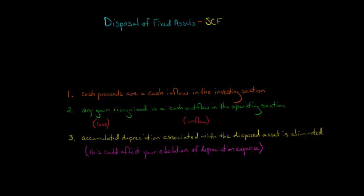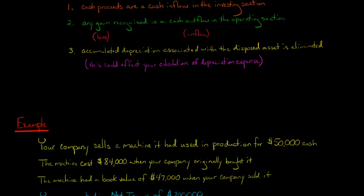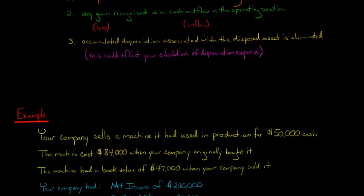I'll show you with an example how this all works. Let's say that your company has a machine that it uses in production. It's not like the company manufactures and sells machines, it was using this machine for production of some other good that you would sell. So it's a fixed asset for this company and it sells it for $50,000 cash. Now, I need to give you some additional information. The original cost of the machine was $84,000, that's the cost when your company bought the machine.